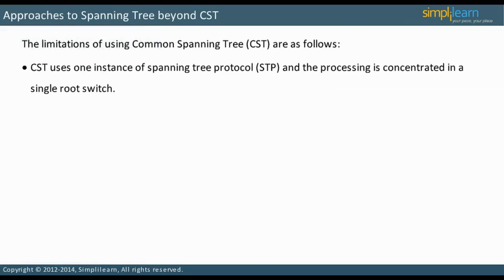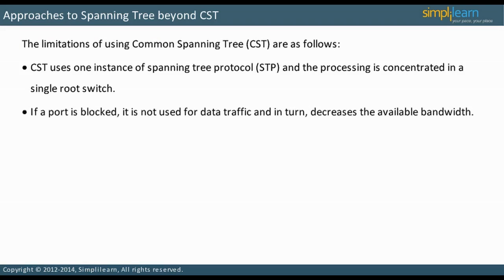Common spanning tree uses one instance of STP. Processing is concentrated in the single root switch. Also, if a port is blocking, then it is not used for any data traffic, although BPDUs are still exchanged. This decreases the amount of bandwidth available in the network.